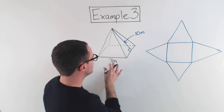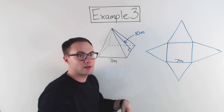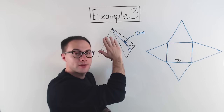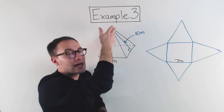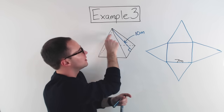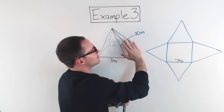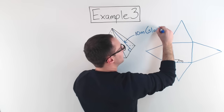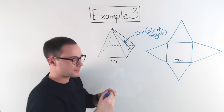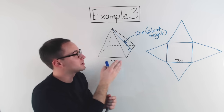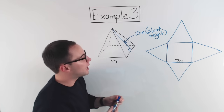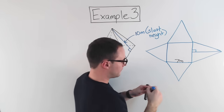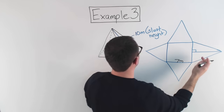Now let's add in some lengths: seven meters, seven meters, seven meters, seven meters — it's a square. This 10 meters is on the surface of the triangle itself — it's not the height of the pyramid. The height would go from the base all the way to the vertex at the top. Instead, this is on the slant — it's called the slant height. We need it to find the surface area; it's the height of the triangular faces. So that's 10 meters.